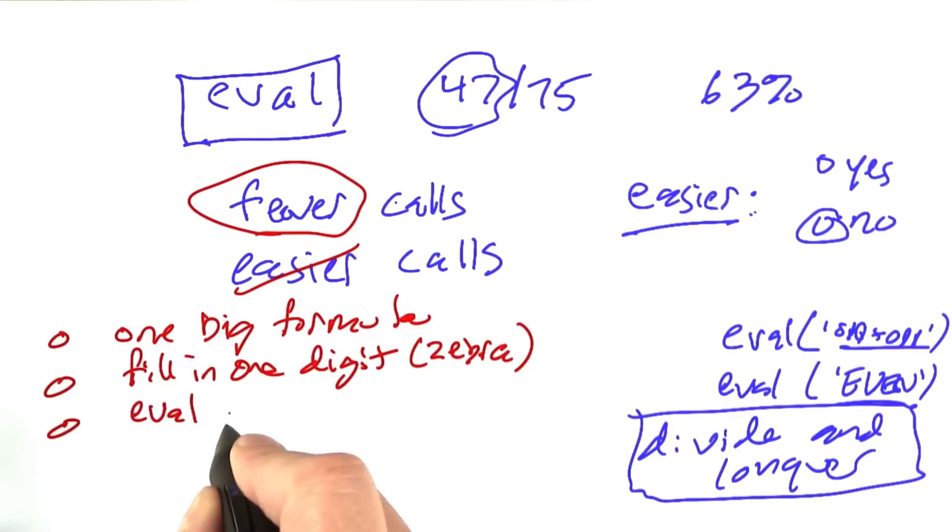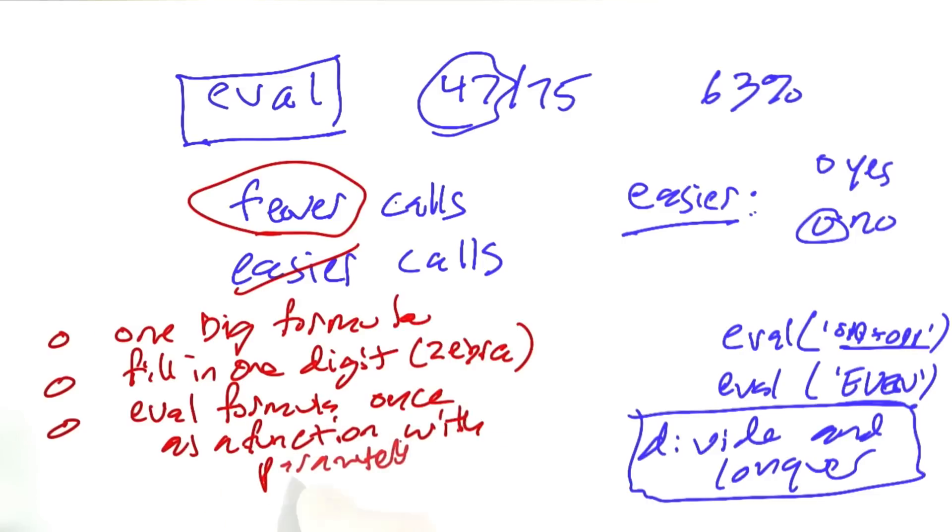And then the third approach would be to eval the formula once, but eval it as a function with parameters. So to say, to do all the work of figuring out how to understand number plus number equals number, do that just once, and then call that function repeatedly with all the permutations. So there'd still be lots of calls to the function, but there'd be fewer calls to eval.